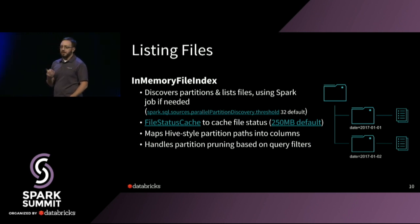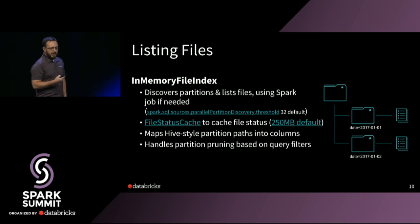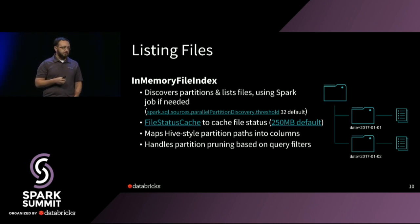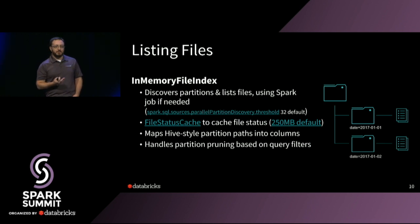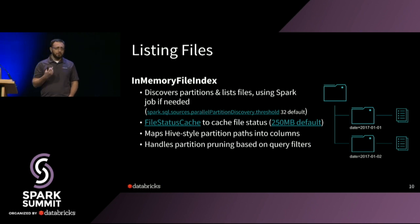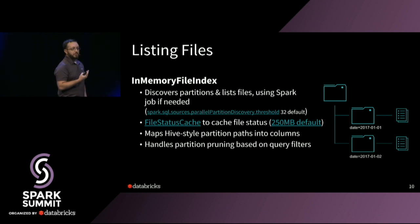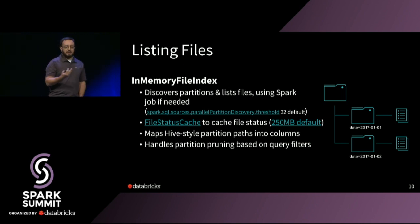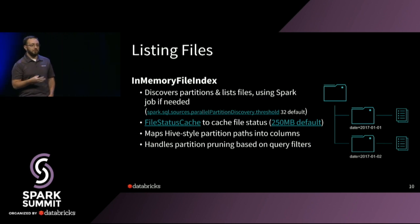As Spark gets the file listings, it caches them internally in another API called the file status cache. Because file listings can be an expensive operation, we want to avoid redoing them again and again. One thing to keep in mind is that there's a 250MB default for this cache, and it's shared across the Spark session. So if you're in a notebook environment or have multiple users sharing a Spark session with multiple concurrent queries, they're all sharing the same cache when loading DataFrames.